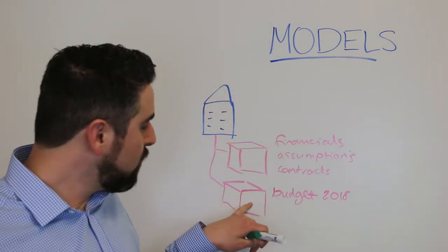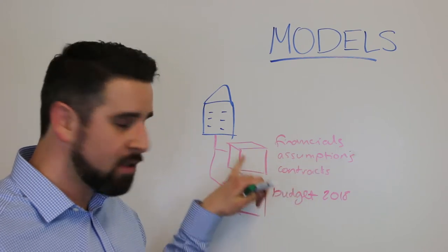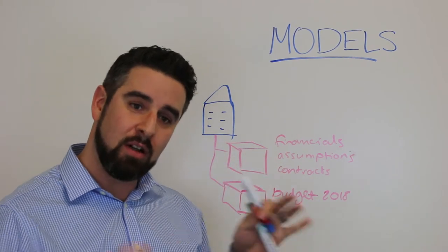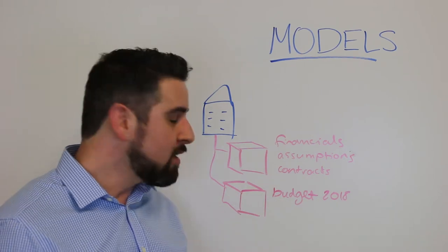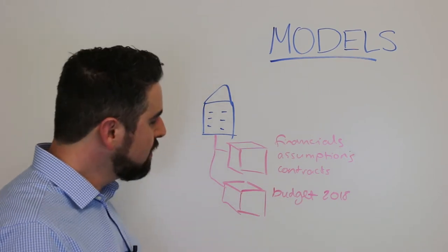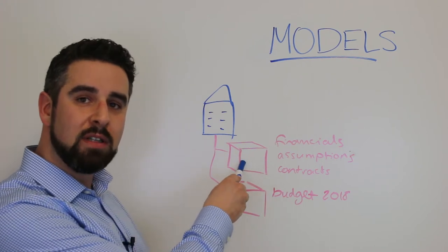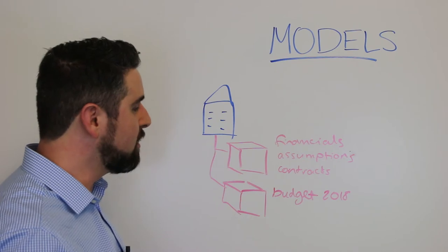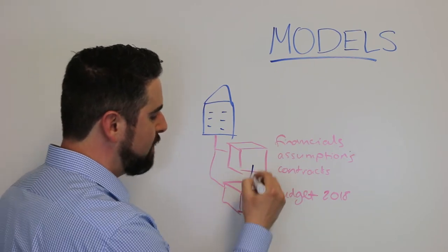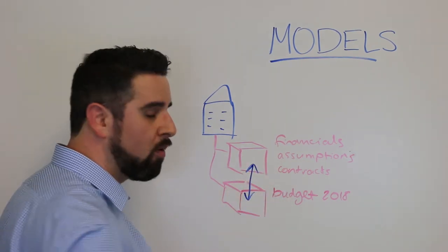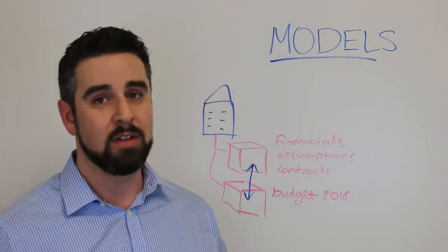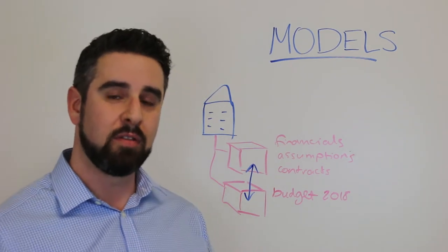This model will have all the same information that this model has however the budget information is locked down for 2018. So now you have the ability to bring updated actuals into this particular model and compare it to the budget information that you have in this model. So you now have the ability to do reporting that compares these two models against one another. So you can see your budget versus actuals as you're moving through the year.